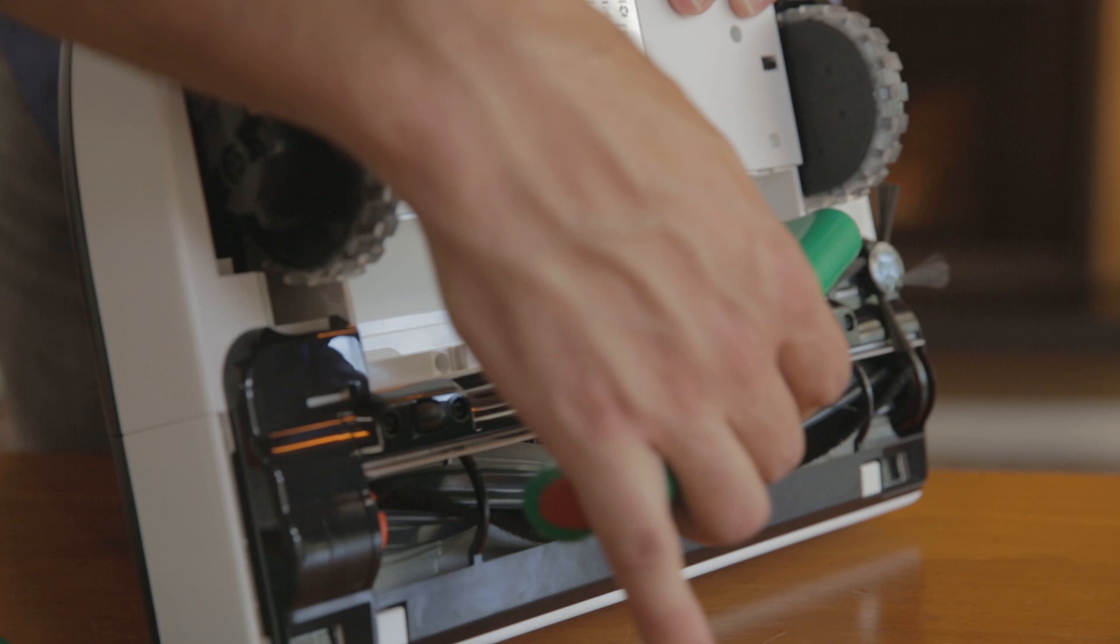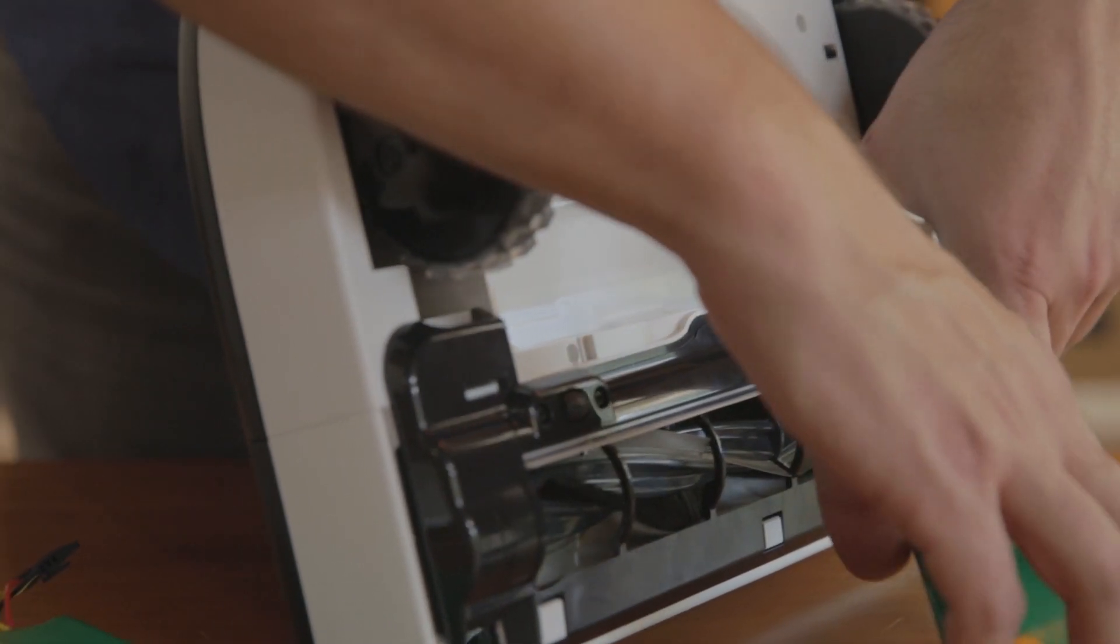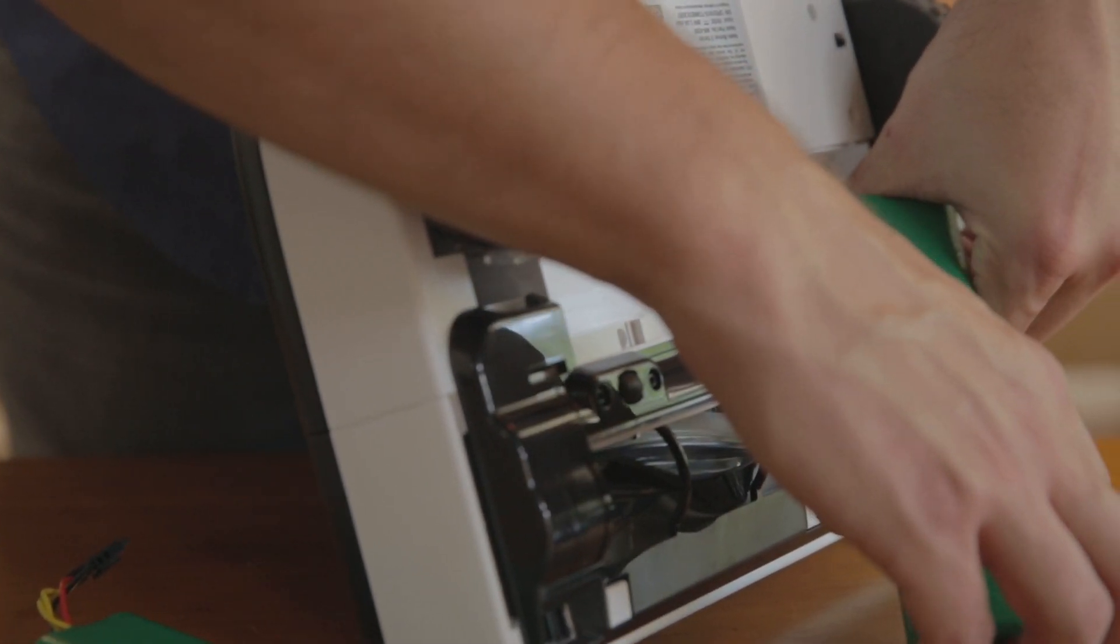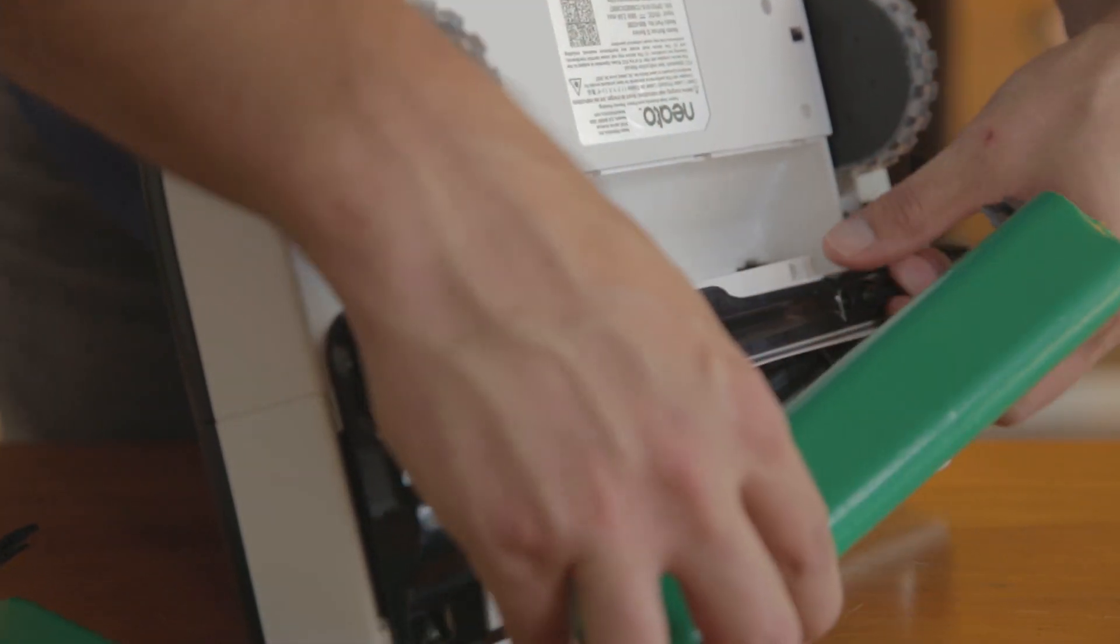Carefully lift the battery from the battery cavity and use your thumb to release the clip securing the connector to the robot, being careful not to pull on the wires.